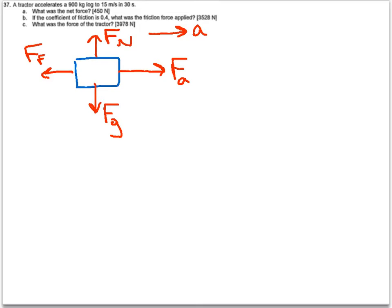Alright, so the first thing we need to do, we don't know what the acceleration is. But we do know enough that we can figure it out. So let's figure it out. Because that would be really helpful. So to find our acceleration, we know the v initial is zero. We know v final is 15 meters per second. Our time is 30 seconds.